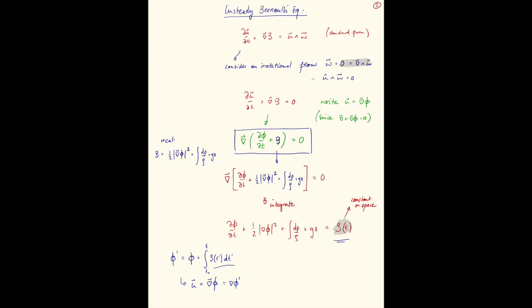I drop the dash and just rewrite my unsteady Bernoulli equation as d phi dt plus a half gradient of phi squared. And this now has to be a constant since we absorbed b of t into our definition of phi.